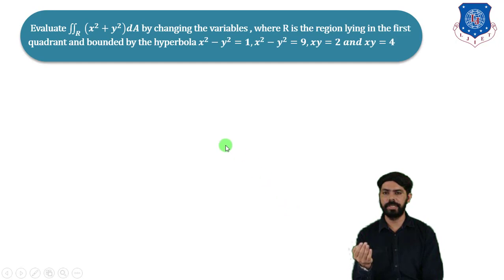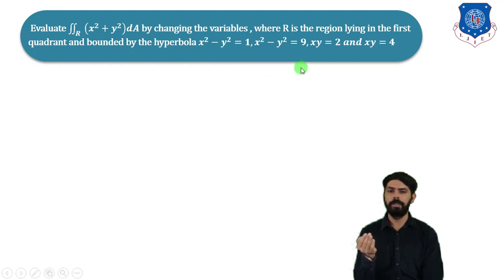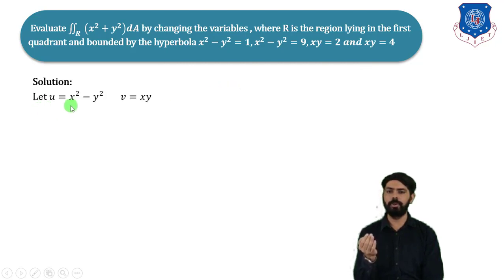The next example: evaluate the double integral over region R of (x² + y²) dA by changing variables, where R lies in the first quadrant and is bounded by the hyperbolas x² − y² = 1, x² − y² = 9, and xy = 2, xy = 4. Since no transformation is given, let u = x² − y² and v = xy.